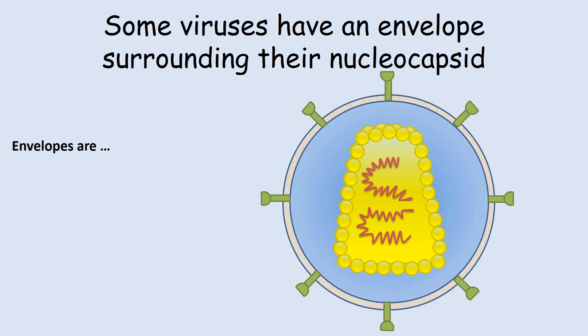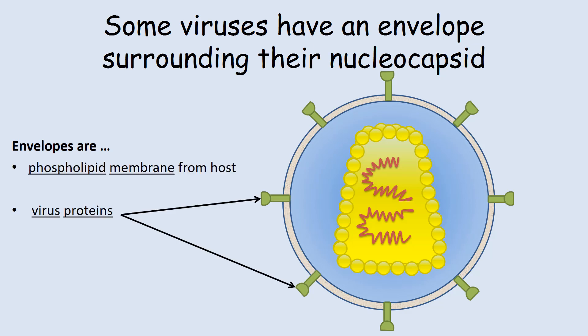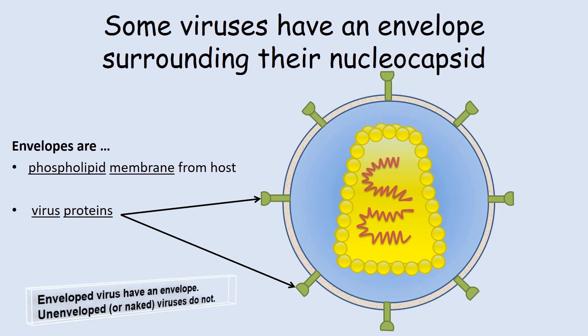Besides the core nucleocapsid, some viruses are surrounded with an external phospholipid membrane that is studded with proteins. These viruses are said to be enveloped viruses, as opposed to those that do not have an envelope, which are called unenveloped or naked viruses. The phospholipid membranes come from the host cell that made the virus — it could come from the host cell membrane, nuclear envelope, or endoplasmic reticulum membranes.